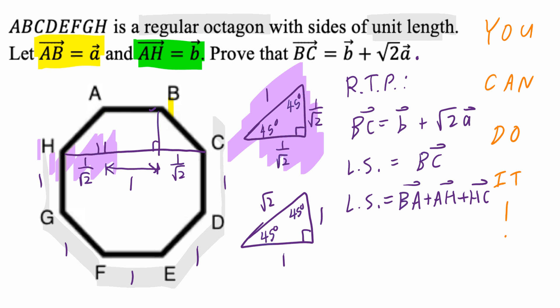I'm saying B, A, plus AH, plus HC, which is basically B, A, plus AH, plus HC. This equals to BC.